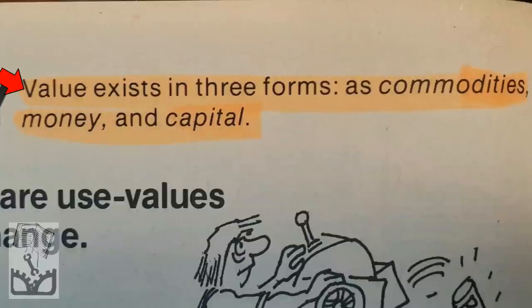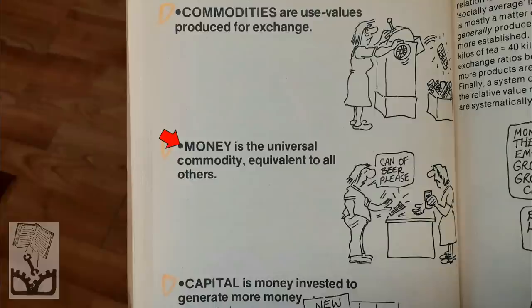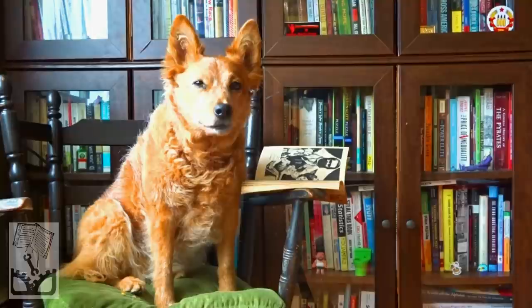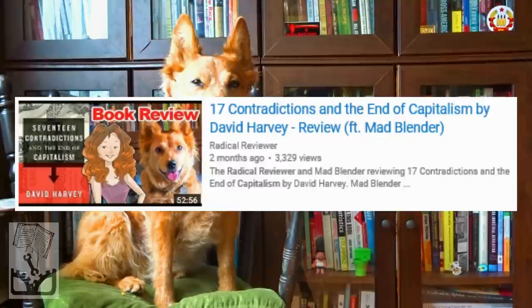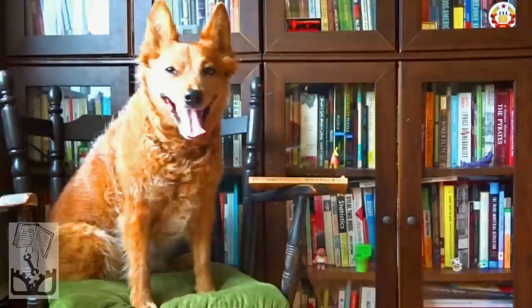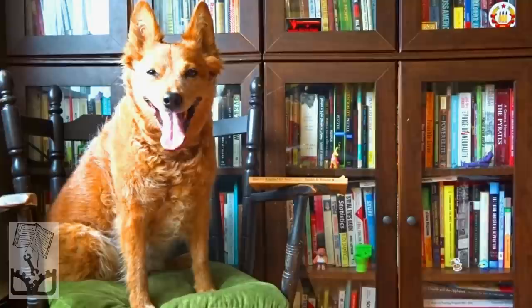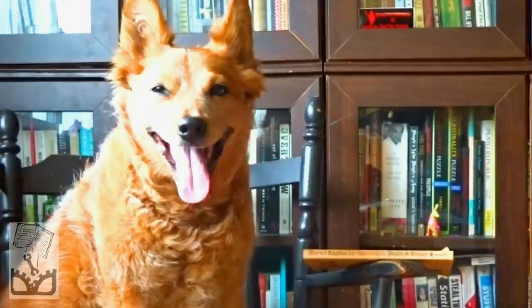Chapter 9: Money. Smith and Evans state: 'Value exists in three forms — as commodities, money, and capital. Commodities are use values produced for exchange. Money is the universal commodity, equivalent to all others. Capital is money invested to generate more money.' For more on money and its function in a capitalist economy, I recommend my review of 17 Contradictions and the End of Capitalism. Chapter 10: The Accumulation of Capital. This is where Marx cracks the code, explaining why the capitalist class and the working class have such different goals — class warfare, if you will.